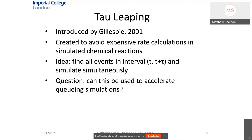The idea behind tau leaping is to take a sample interval of a predetermined size tau, calculate the number of repetitions for each event within this interval, and apply them simultaneously. The main advantage is that it avoids expensive rate calculations. Although rate calculations are quite cheap in queuing models, we still consider tau leaping because it may save time when updating metrics, the state, or the timeline.